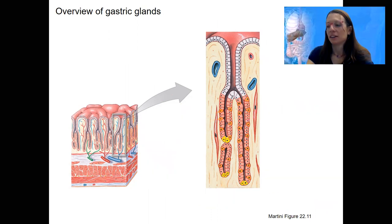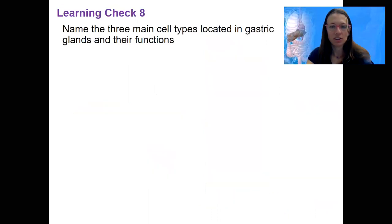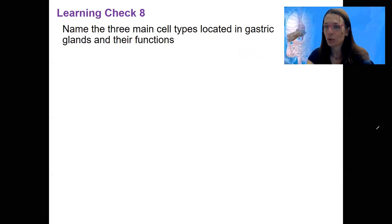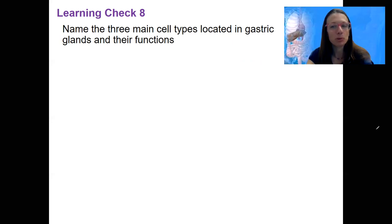Let's do a learning check on this. Name the three main cell types located in the gastric glands and their functions. Note that the one you're not naming here is the mucus cells — those are in the gastric pits along the neck region.